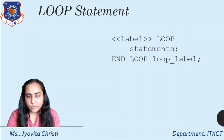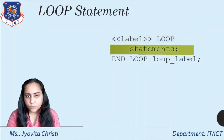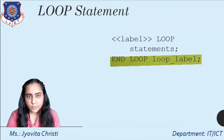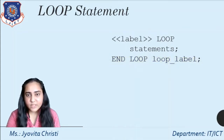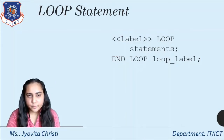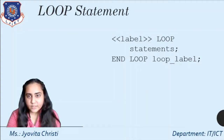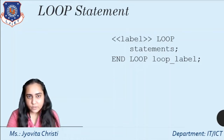This basic loop statement consists of a loop keyword, a body of executable code, and the end loop keywords. The loop statement executes the statements in its body and then returns control to the top of the loop. Typically the body of the loop contains at least one exit or exit when statement for terminating the loop, otherwise the loop becomes infinite.